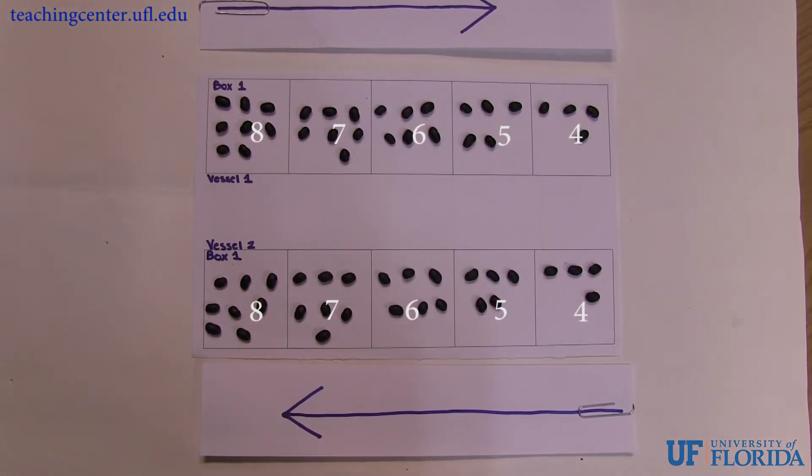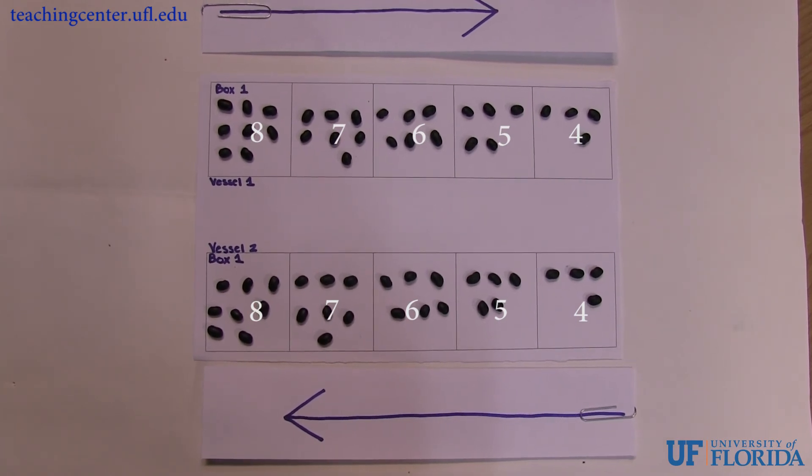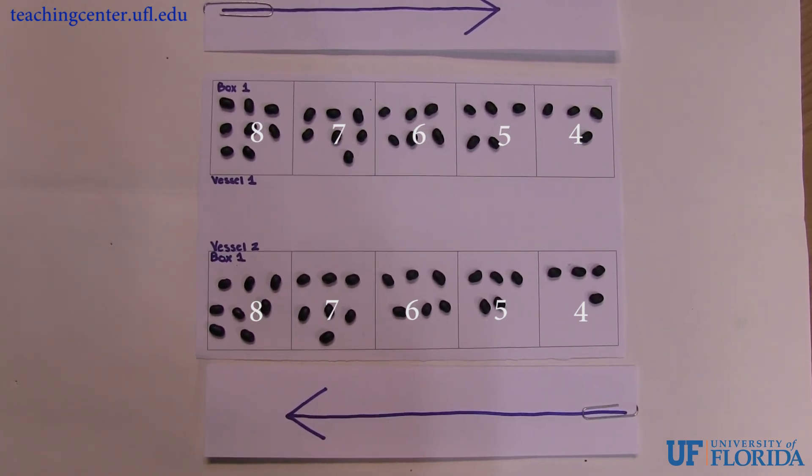In nature, this is optimal since the concentration gradient is maintained, ensuring that transfer continues throughout the entire length of both vessels.